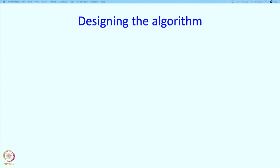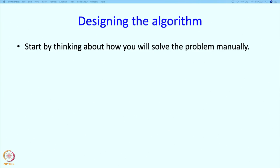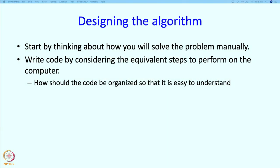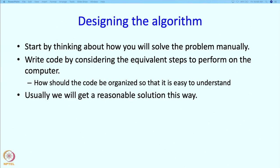Now let us talk about how we might design the algorithm to respond to such queries. As we have said several times in this course, let us start by thinking about how we might solve this problem manually. After we do that, we should consider what is the equivalent of the manual steps on a computer, and that will allow us to write the code. While doing this, we will also continuously keep in mind that we want the program to be easy to understand. This strategy of manually designing a program by thinking about how you solve the problem manually usually gives us a reasonable solution.